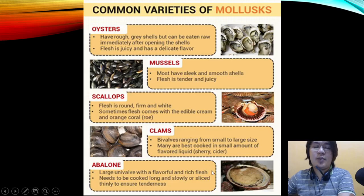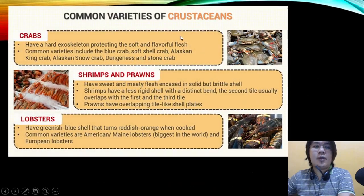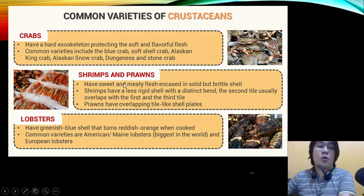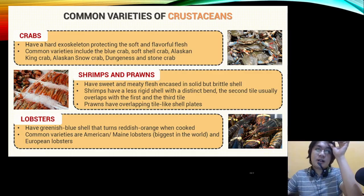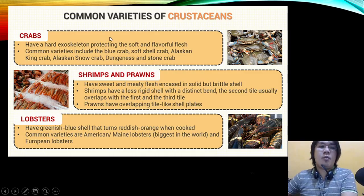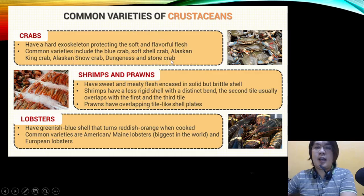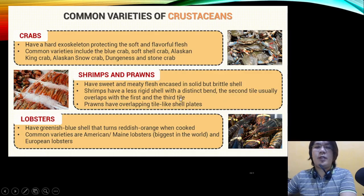Common varieties of crustaceans include crabs, shrimps and prawns, and lobsters. Crabs have a hard exoskeleton protecting soft and flavorful flesh; common varieties include blue crab, soft shell crab, Alaskan king crab, Alaskan snow crab, Dungeness, and stone crab. Shrimps and prawns have a sweet, meaty flesh encased in a solid but brittle shell. Shrimps have a less rigid shell with a distinct bend, where the second tile overlaps the first and third. Prawns have overlapping tile-like shell blades.